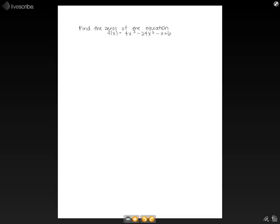In this video, we're going to find the zeros of an equation. Let's use the equation f(x) = 4x³ - 24x² - x + 6 as an example.